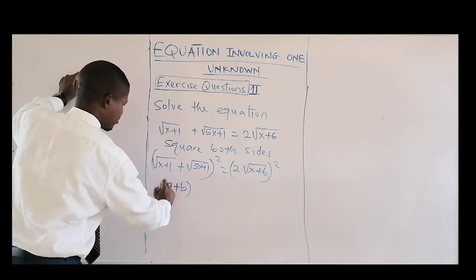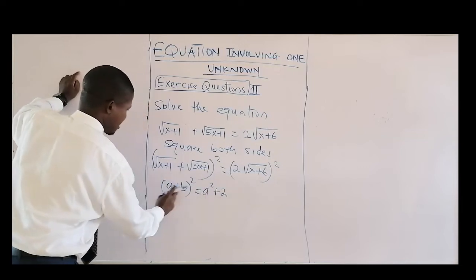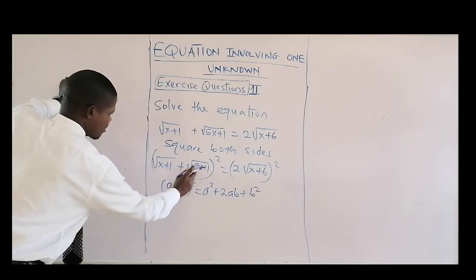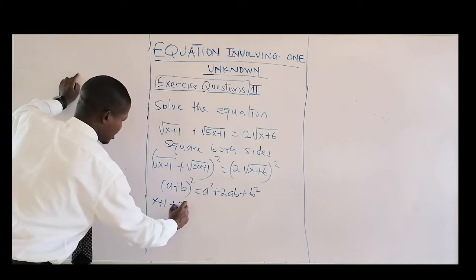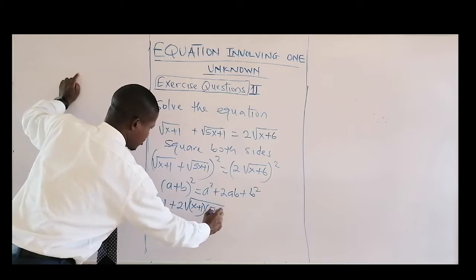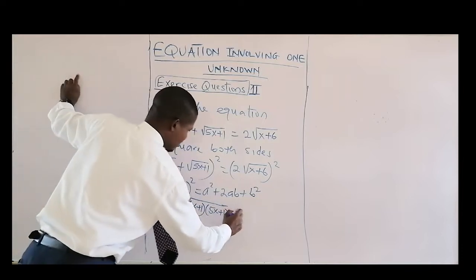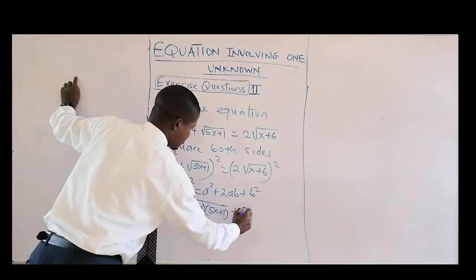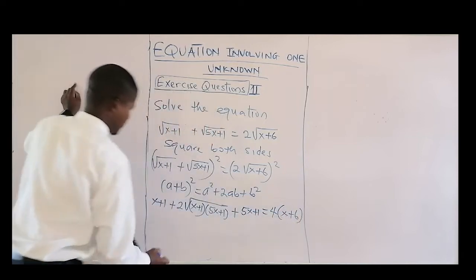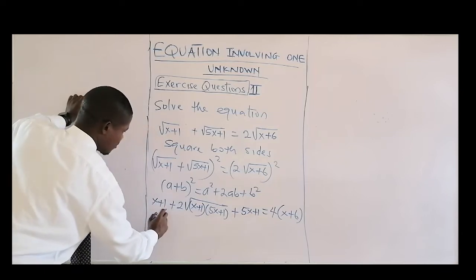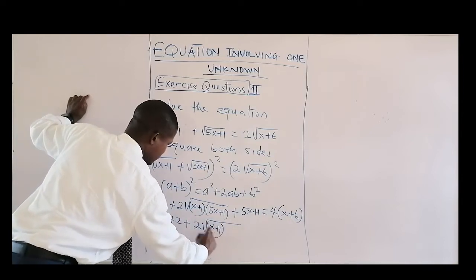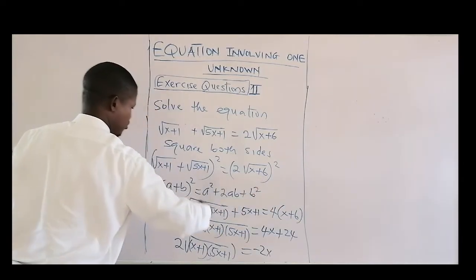Using the expansion (a + b)² = a² + 2ab + b², the left side becomes (x + 1) plus two times √(x+1) times √(5x+1), plus (5x + 1). The right side gives four times (x + 6). Simplifying: 6x + 2 plus two times √((x+1)(5x+1)) equals 4x + 24, which gives us 2√((x+1)(5x+1)) equals 22 minus 2x.